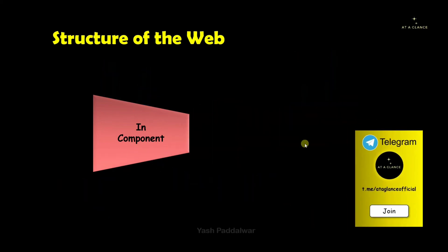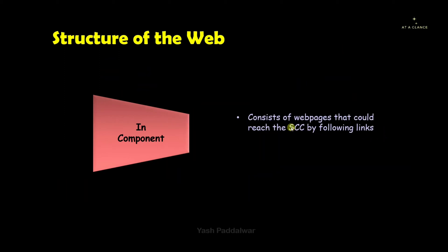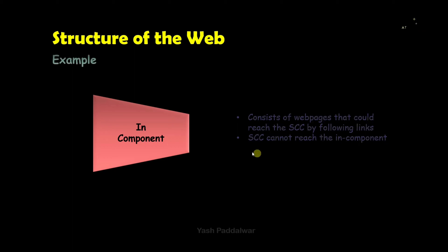The in component consists of web pages that can reach the SCC by following the set of links present inside it. All the web pages inside the in component are interconnected with each other, and they can reach the strongly connected component. However, not every web page can directly connect to the SCC — it reaches the SCC by following different links. Importantly, the SCC cannot reach the in component web pages. It is one way: the in component can reach the SCC, but the SCC cannot reach the in component.